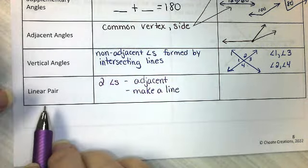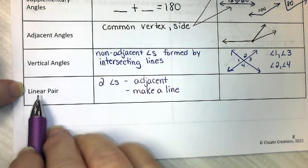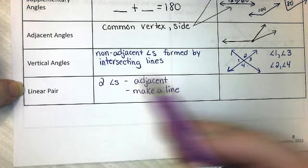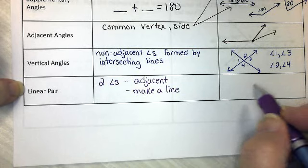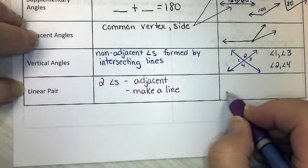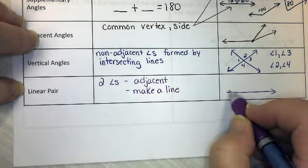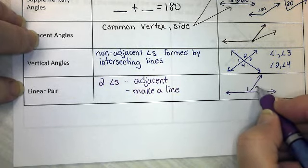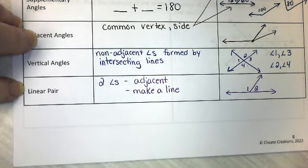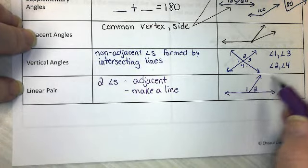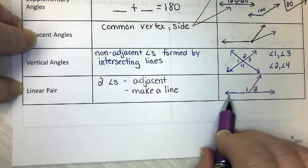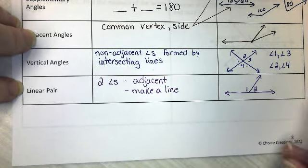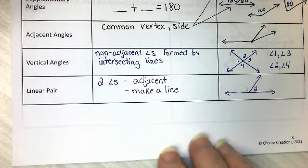There's an official definition that says their sides form opposite rays, but we're just going to say they make a line. So here we go. Angle 1 and angle 2 would be considered a linear pair. They're adjacent, they have that common side, and they make a line. Those are called a linear pair.